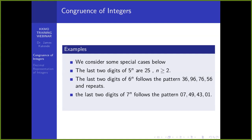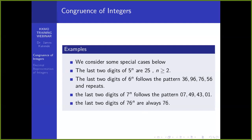The last two digits of 7 raised to n follow a repeating sequence of 4: 49, then the next values, then 01, and this repeats. These last two digits always repeat in a sequence of 4 for consecutive powers of 7. And 76 is a special number — the last two digits will always be 76 for any power. This is particularly useful when working with multiple choice problems.